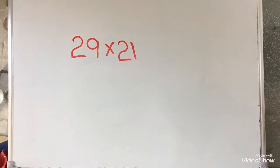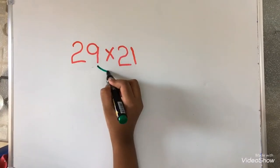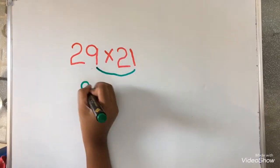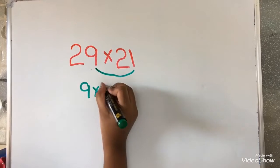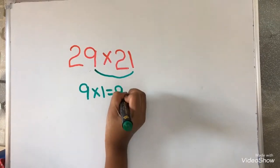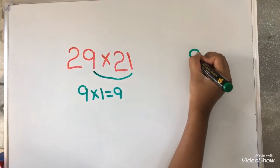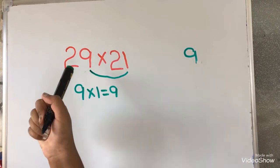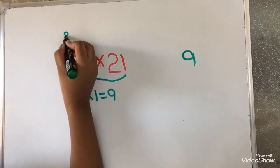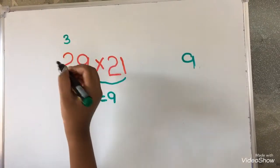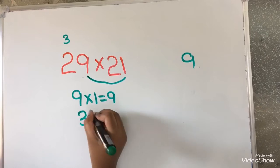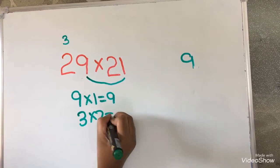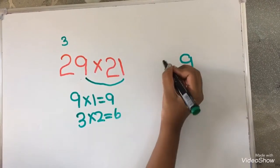Now I am going to multiply 9 into 1. So 9 into 1 equals 9. I am going to write 9 over here. Now I am going to write the number after 2. So the number after 2 is 3. Now 3 2's are 6. I am going to write it here. 3 2's are 6.